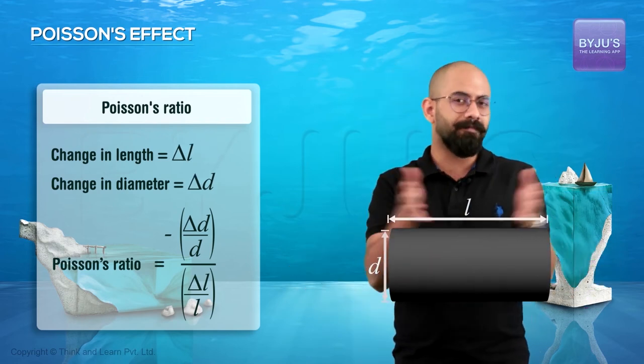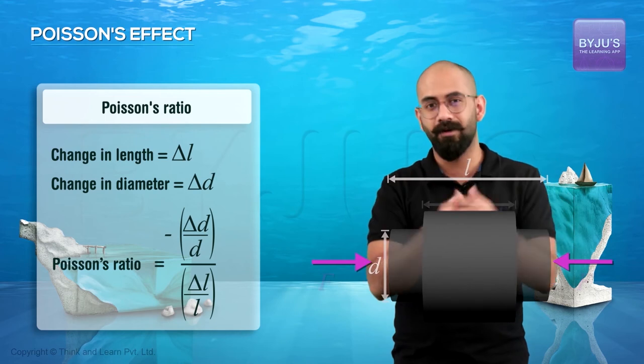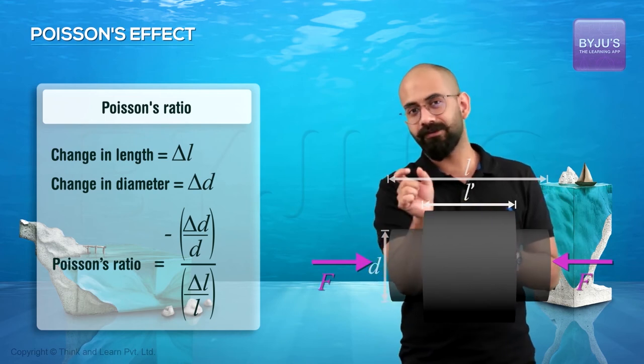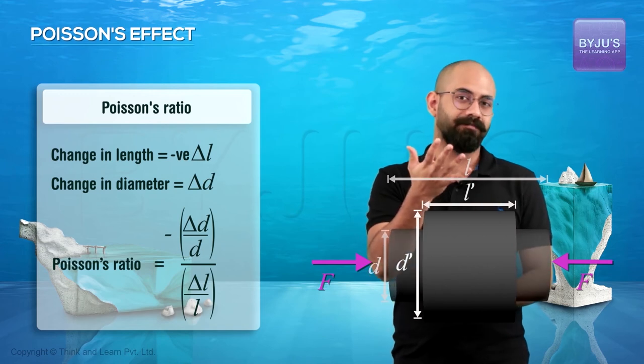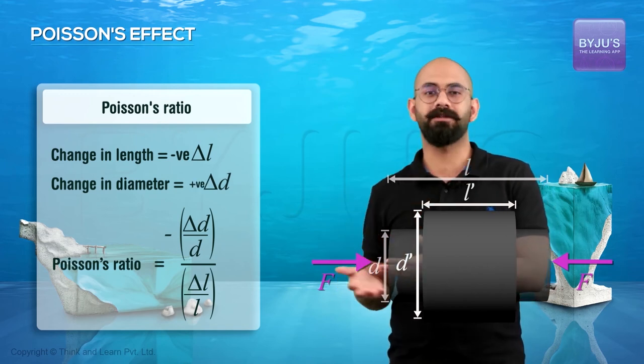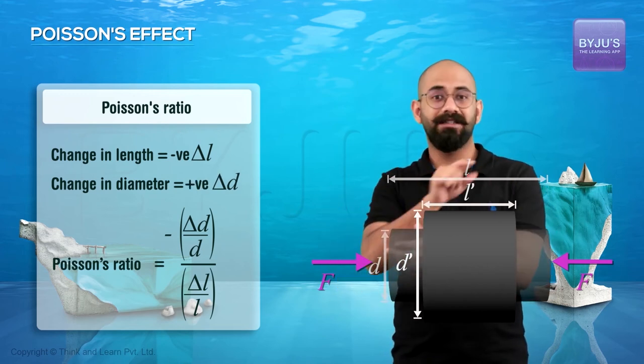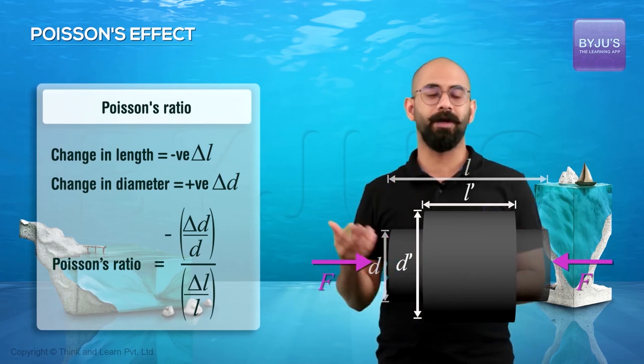This is true even when you compress it. So when you push it inward, delta L reduces, so delta L will be negative. But your D, your diameter, will increase, so delta D will be positive. So again, if you add just one negative sign, the whole ratio becomes positive again.